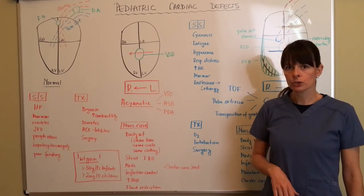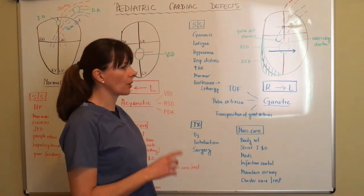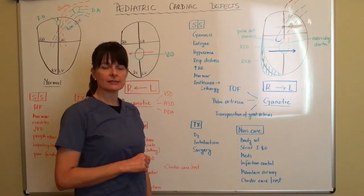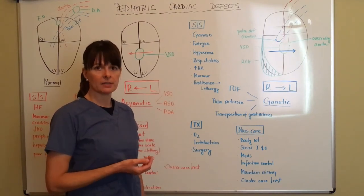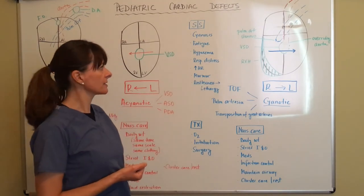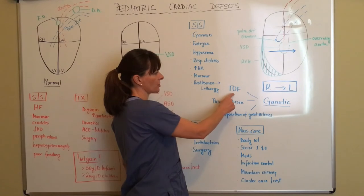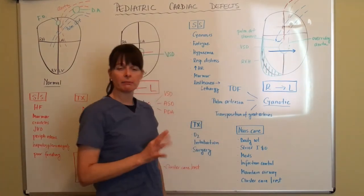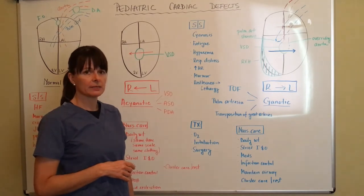Now we'll move on to cyanotic defects. So for cyanotic defects there are a variety of different defects again that would lead the patient to become cyanotic. The one that I've drawn out here is Tetralogy of Fallot, T-O-F written here, Tetralogy of Fallot. And tetra means four so that means there's four different things going on in this patient's heart.